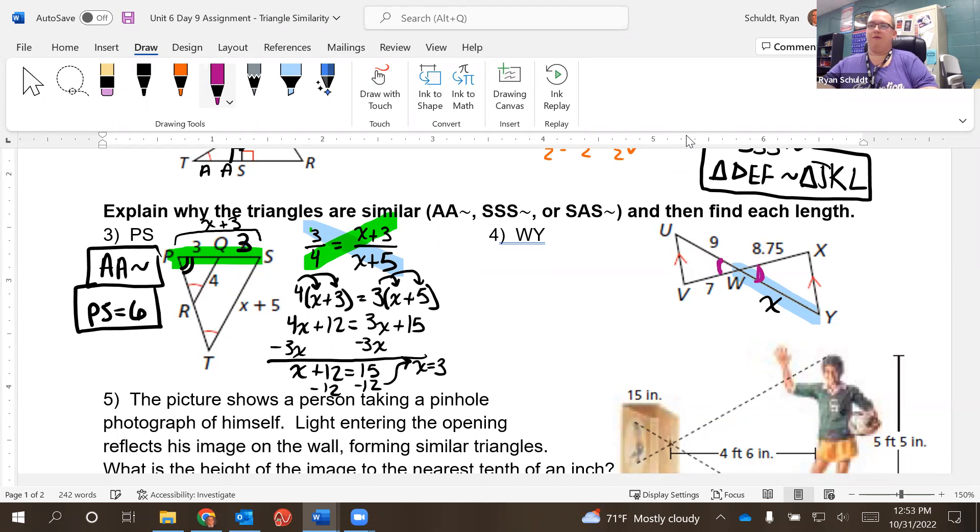Then we've got some parallel lines right here, which means there's a transversal. I can say these two are alternate interior. So this one's also similar by angle, angle similarity.